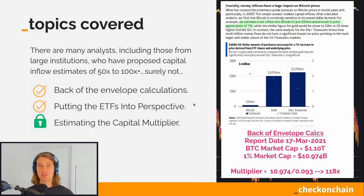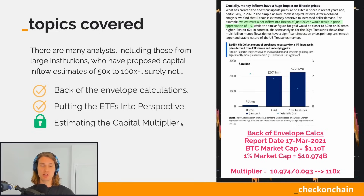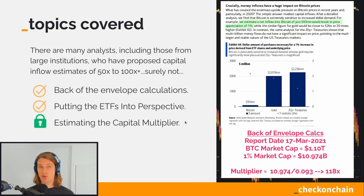We'll cover those back-of-the-envelope calculations and I want to put the ETFs in perspective, because as a small microcosm of the world those numbers can actually tell us a ballpark of where we're going. This is going to be part one of the video. As we move into part two we'll look at how we build this into a capital multiplier effect and understand it as an oscillator and see how it changes over time, because those dynamics can also be quite important.